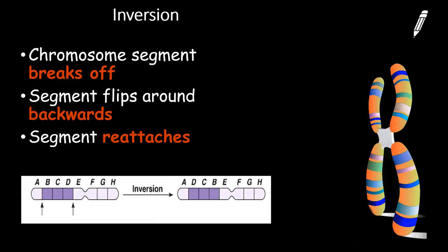the inversion, the portion of the chromosome would break off, rotate, and then reattach. Now the order is different. Now we have D, C, B, as opposed to B, C, D. So that's inversion. A part breaks off and flips around.